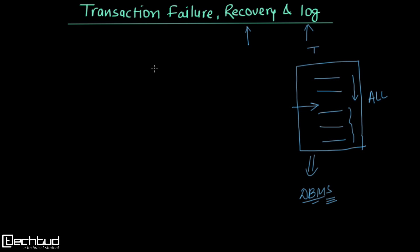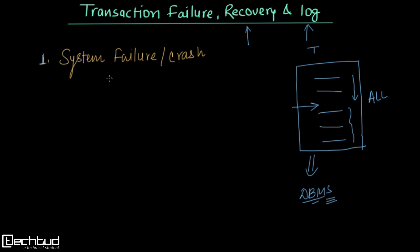The first reason is system failure or system crash. System failure means that during the transaction, at a certain point the system or the computer fails due to any number of reasons — maybe it is a power failure, maybe a network failure, or maybe some internal errors. Due to these reasons the system fails, and that causes transaction failure too.